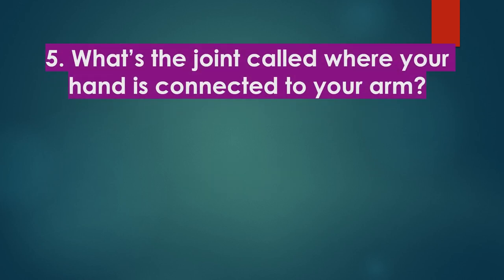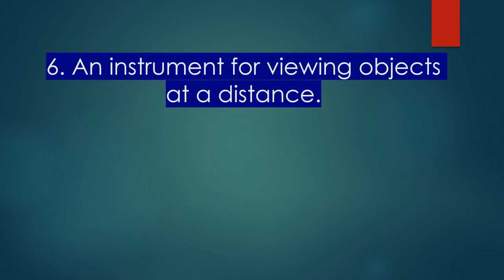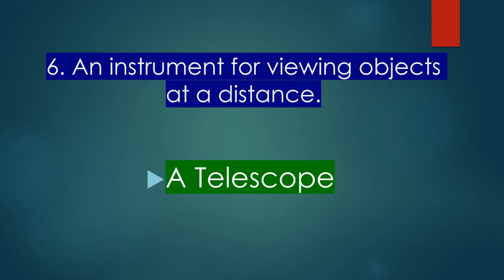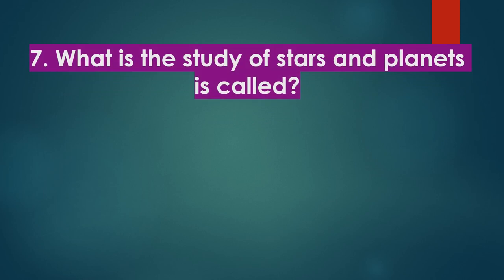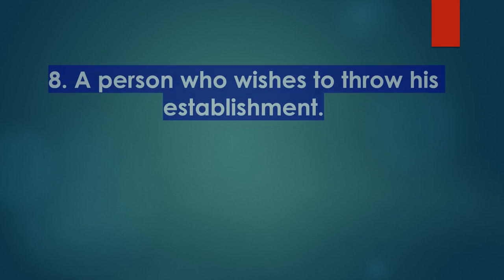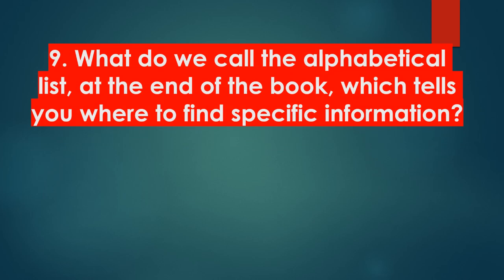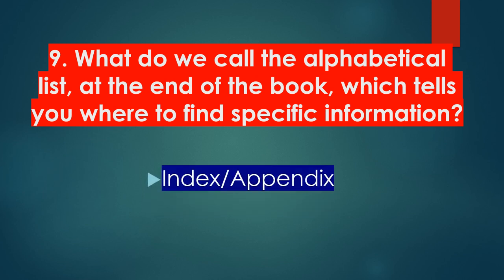What's the joint called where your hand is connected to your arm? Wrist. An instrument for viewing objects at a distance? Telescope. What is the study of stars and planets called? Astronomy. A person who wishes to overthrow the establishment? Anarchist. What do we call the alphabetical list at the end of a book which tells you where to find specific information — index or appendix? Index.